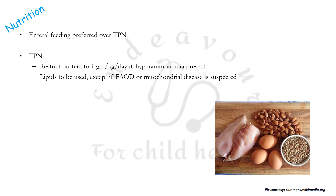Enteral nutrition is preferred over total parenteral nutrition. The aim of total parenteral nutrition is to provide maximum calories with minimal volume. Protein intake should be restricted to 1 gram per kg per day, especially if the patient has hyperammonemia. Lipids should be used, except if fatty acid oxidation defect or mitochondrial disease is suspected.